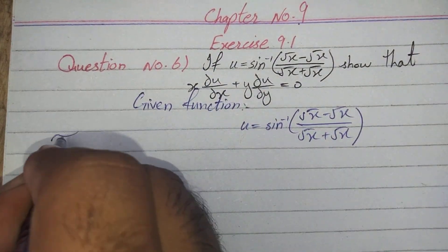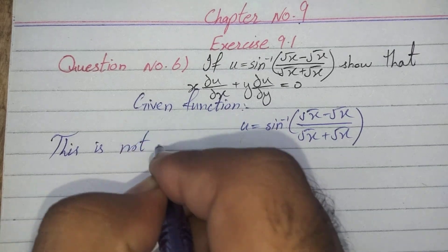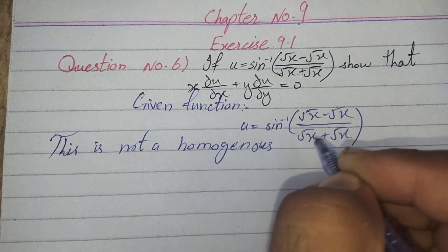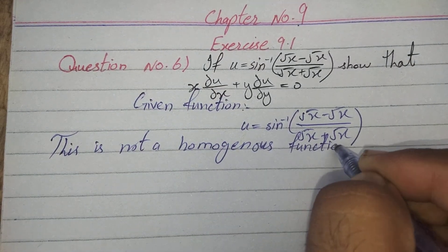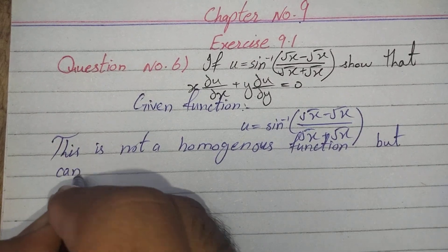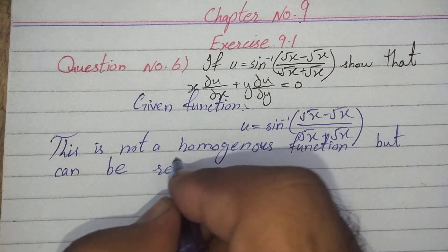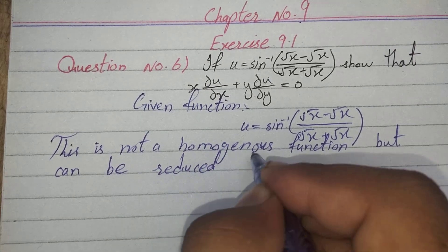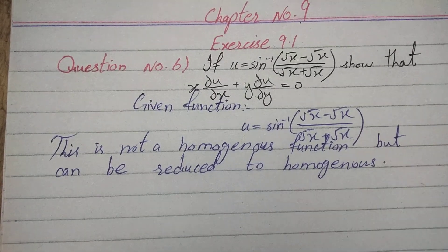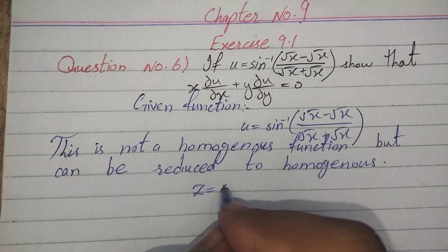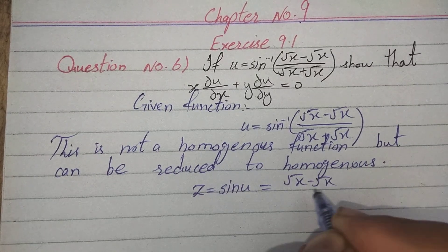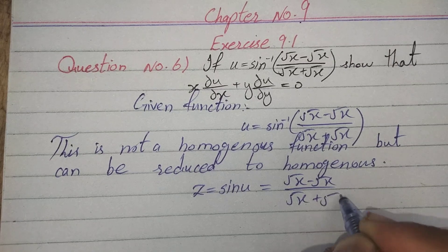This is not a homogeneous function, but it can be reduced to homogeneous. Let z = sin(u) = (√x − √y) over (√x + √y).